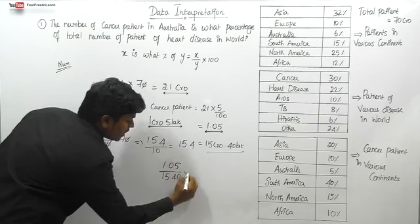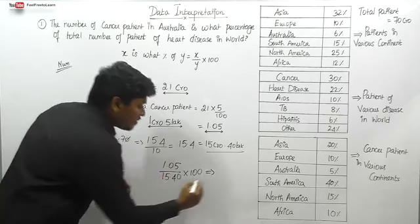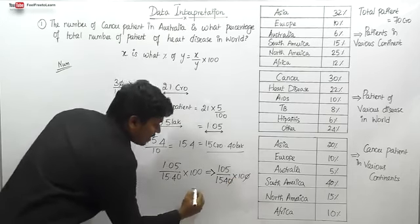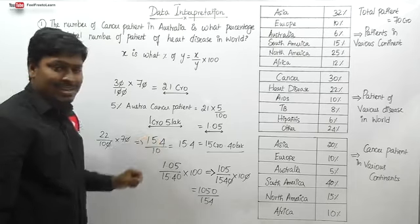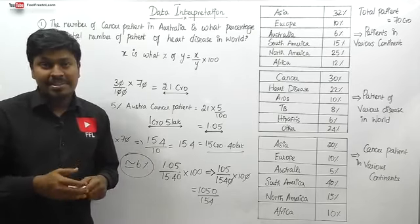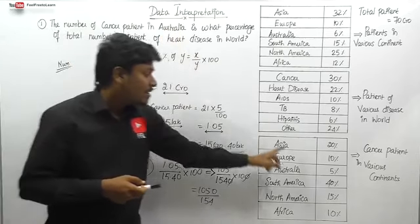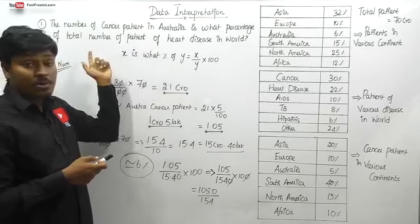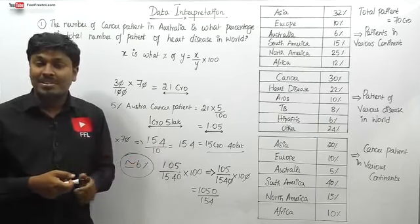We can cancel the decimal points: 1.05 and 15.40 become 105 divided by 1540 into 100. Canceling zeros gives 1050 divided by 154. Dividing this is approximately 6%. So finally we got 6% for question number one. In summary: out of 70 crore, 30% are cancer patients; out of those, 5% are in Australia giving 1 crore 5 lakh. Odd disease is 15 crore 40 lakh. The answer is approximately 6%.